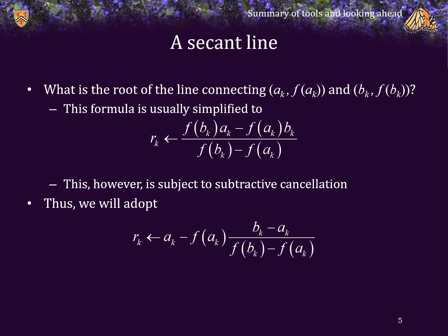Take a look at that expression — does it look familiar? It should, because essentially we are having a sub k minus f at a sub k over an approximation of the slope. That sounds a lot like Newton's method. The only difference is we don't actually know the exact derivative of the function; instead, the slope is the slope of the interpolating linear polynomial.